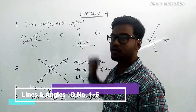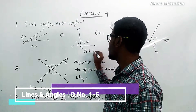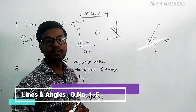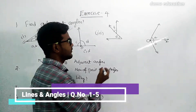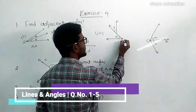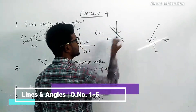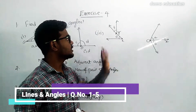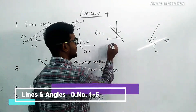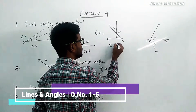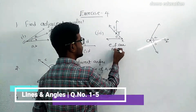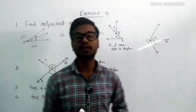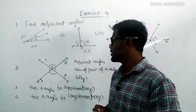For the third pair, E and F — the vertices are different. Let's say the vertex of E is X and the vertex of F is Y. There is no common arm and no common vertex, so E and F are not adjacent angles.